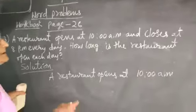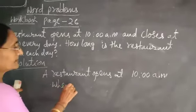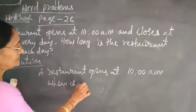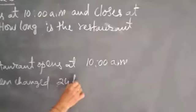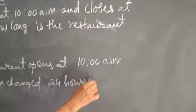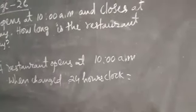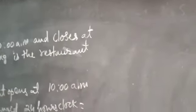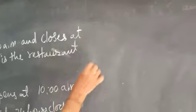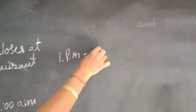You have to change the time to 24-hour clock. You know the 24-hour clock timing? AM times will not change. After noon, after 12 it will change to 24 hours. For example, 1 pm is 13 hours.